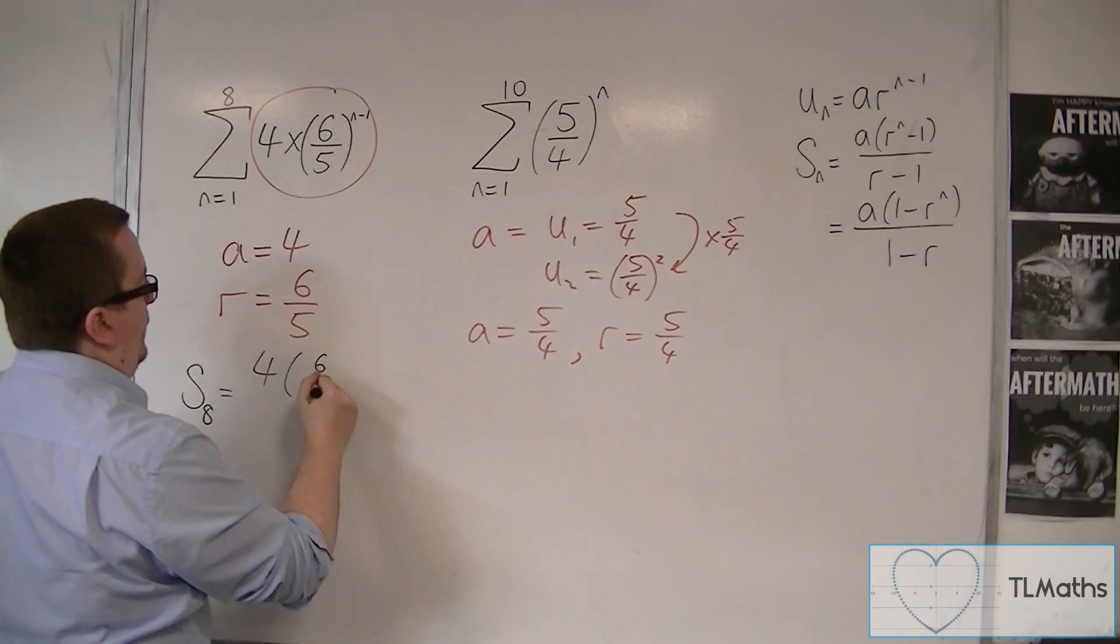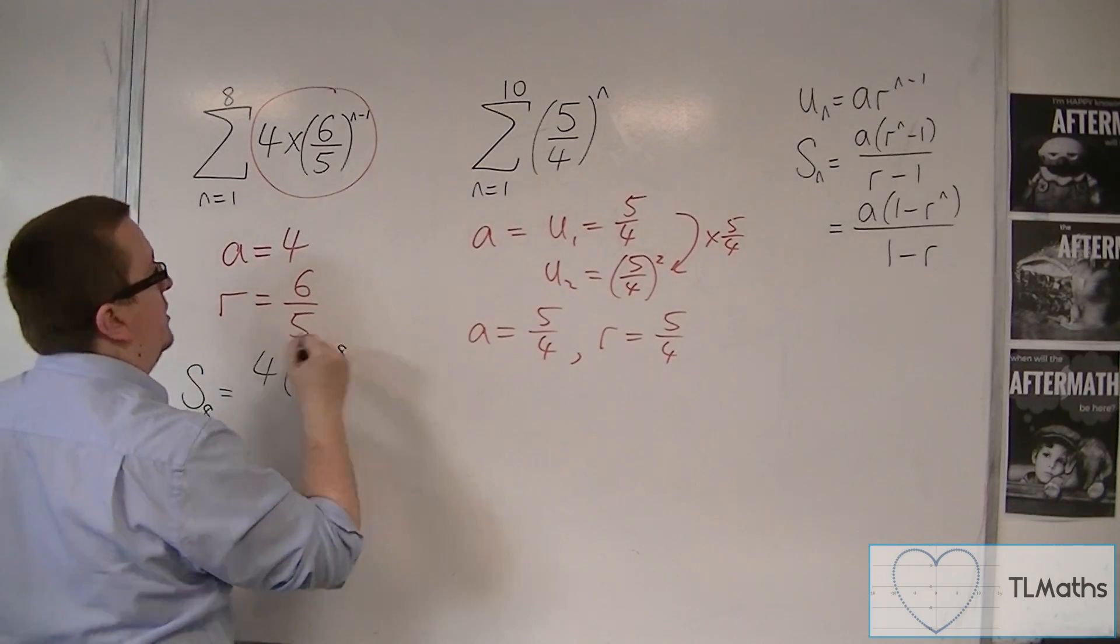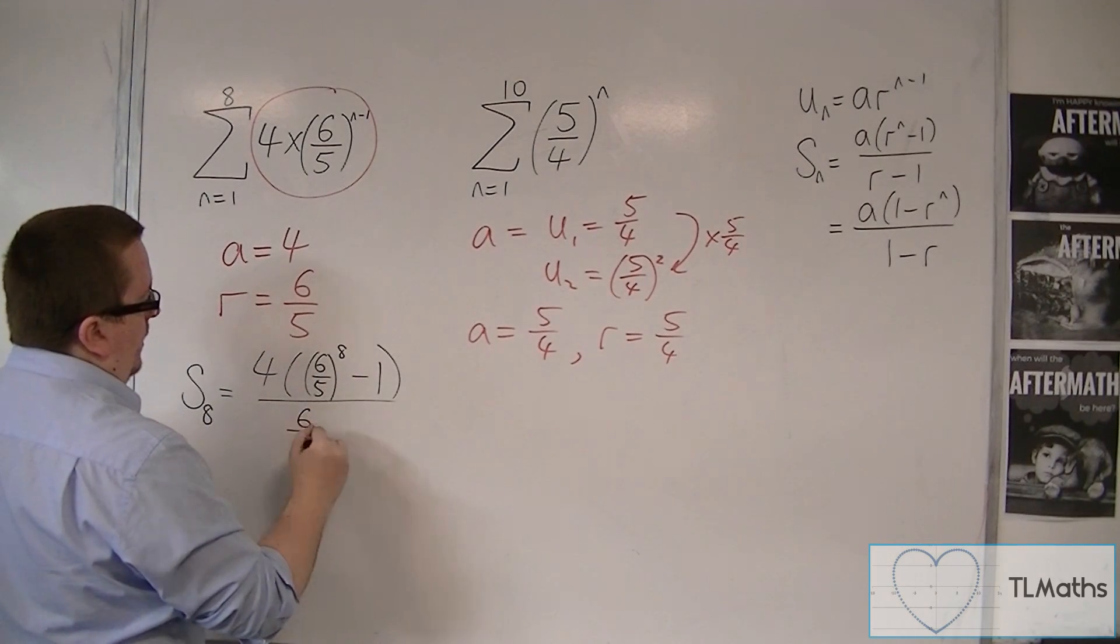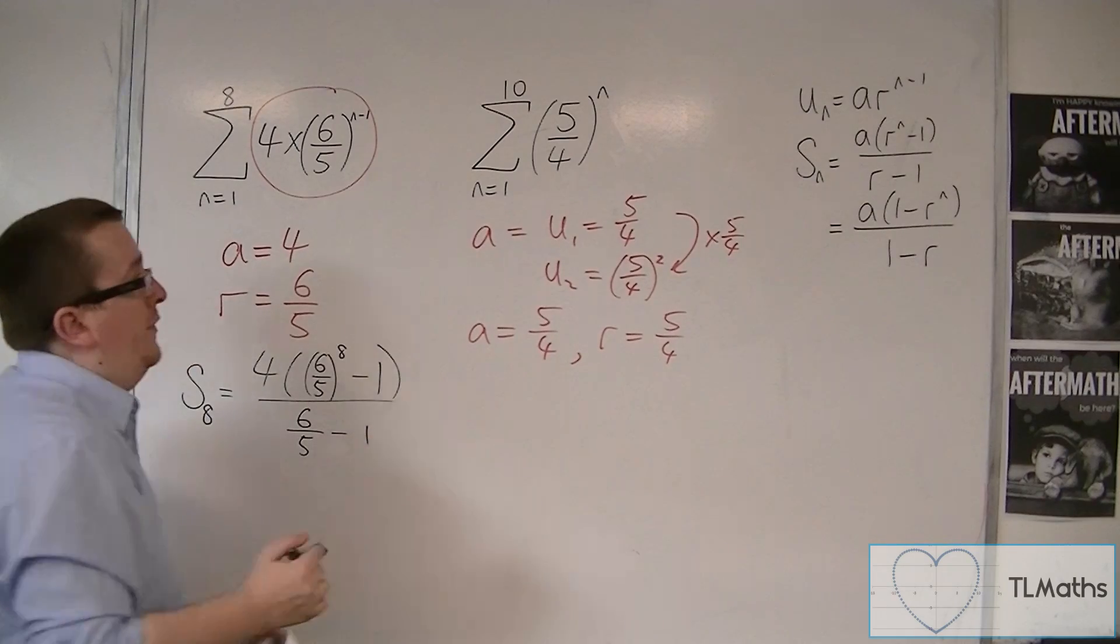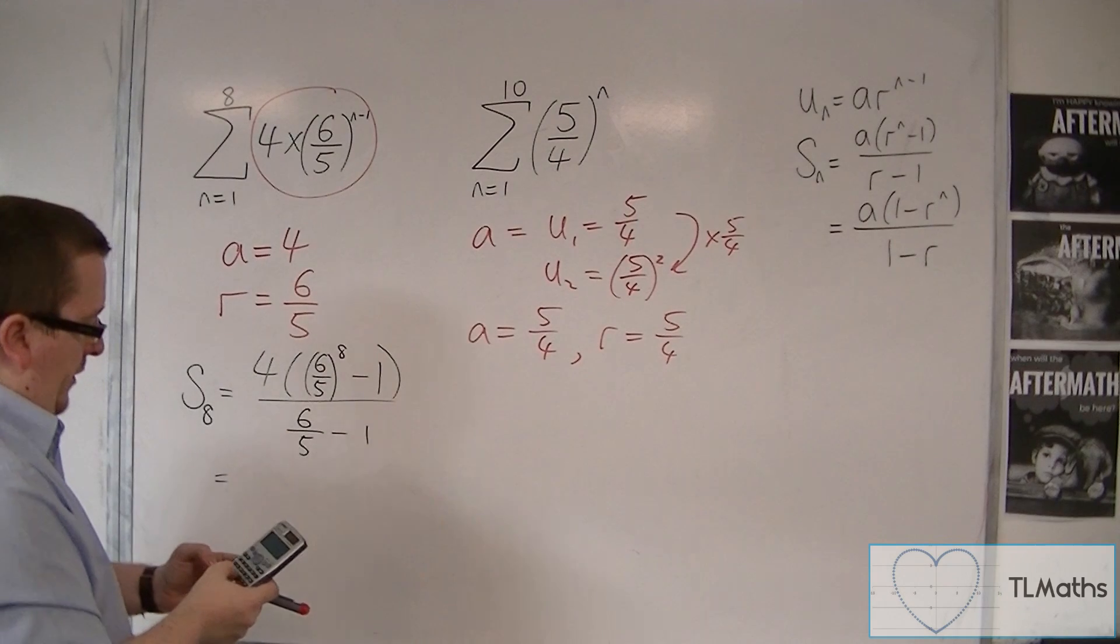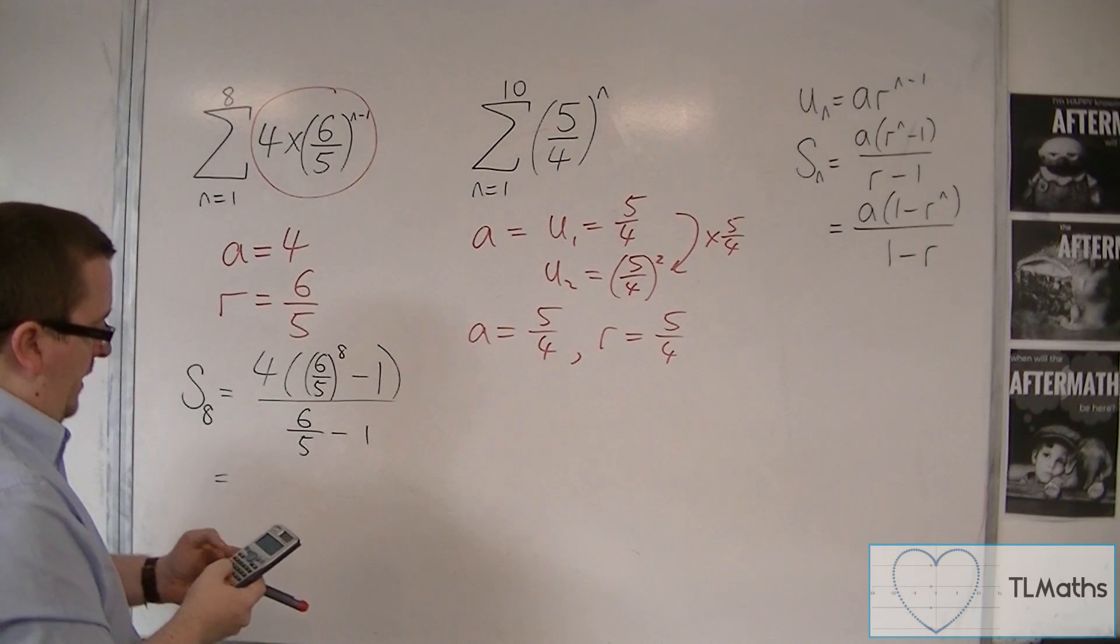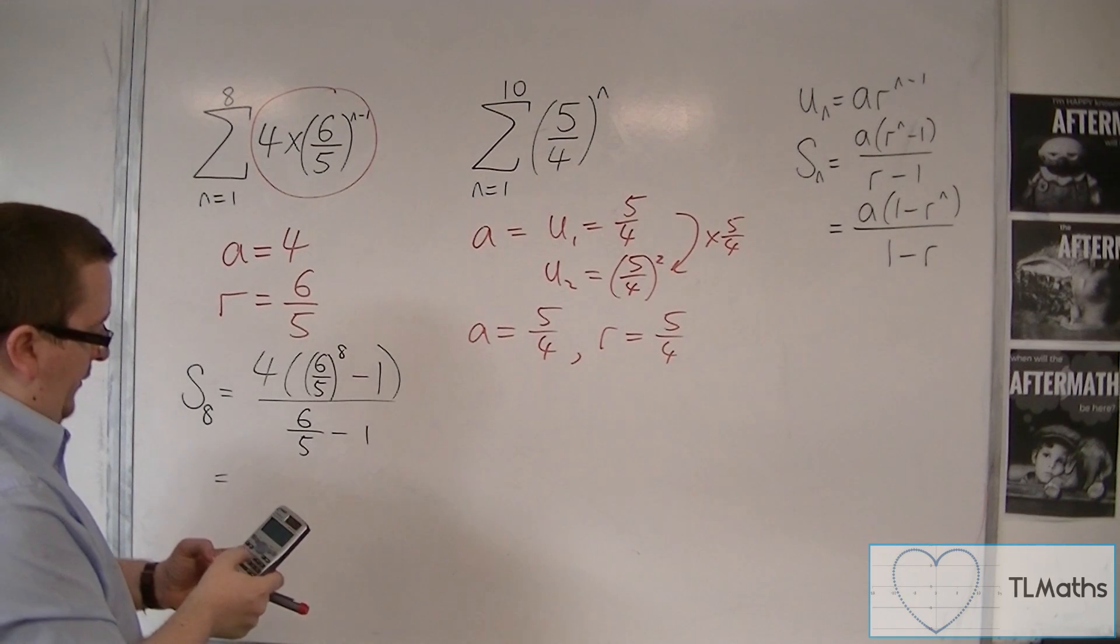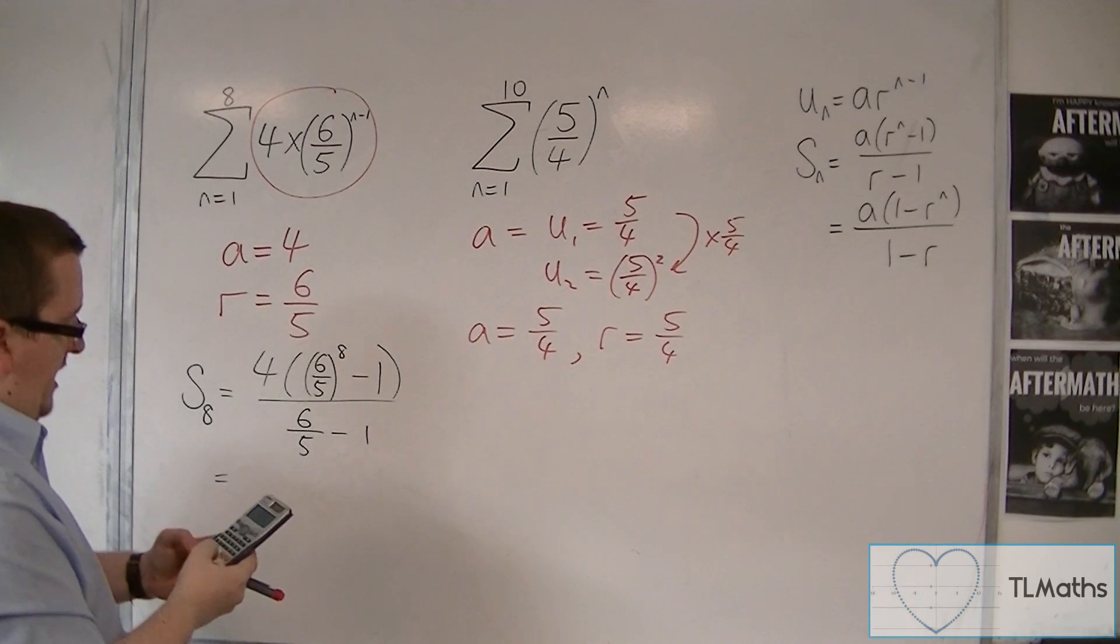So we've got 6 fifths to the power of 8, take away 1. You've got to be careful with your brackets for this. And 6 fifths take away 1. Okay, so 4 times, let's put it into a fraction. 4 times 6 fifths to the power of 8, take away 1, divided by 6 fifths, take away 1.